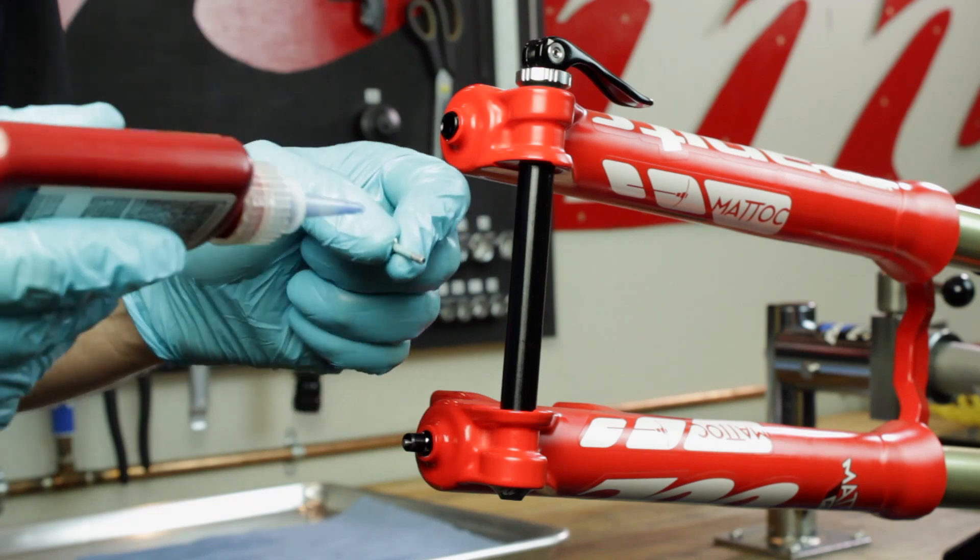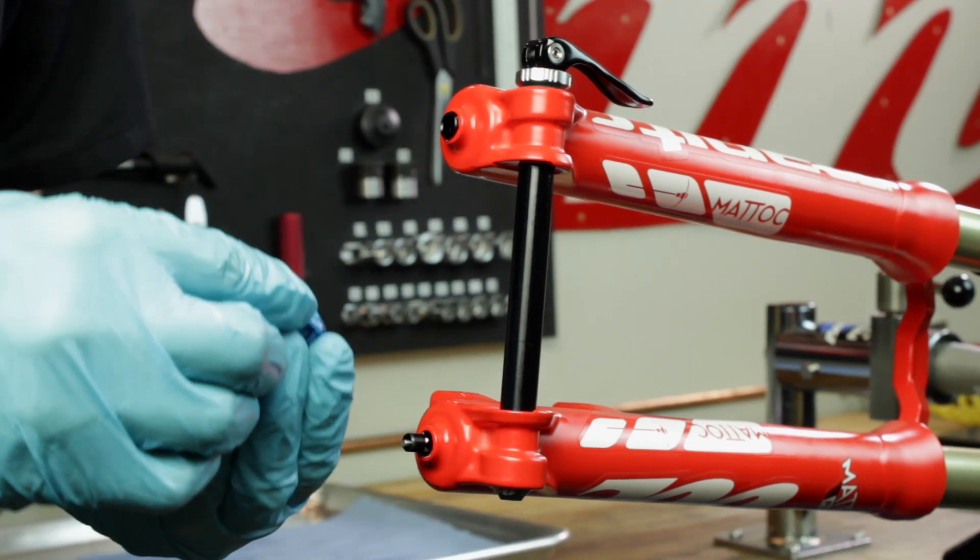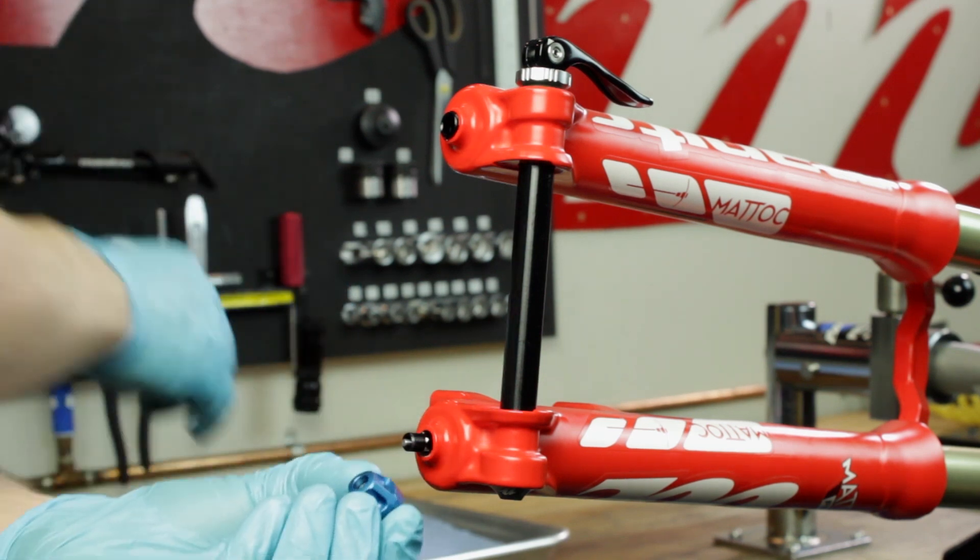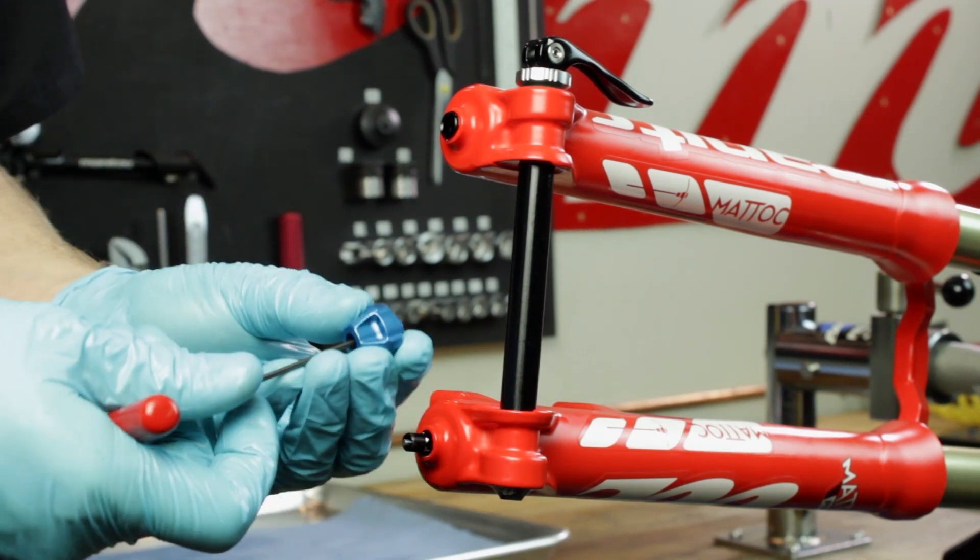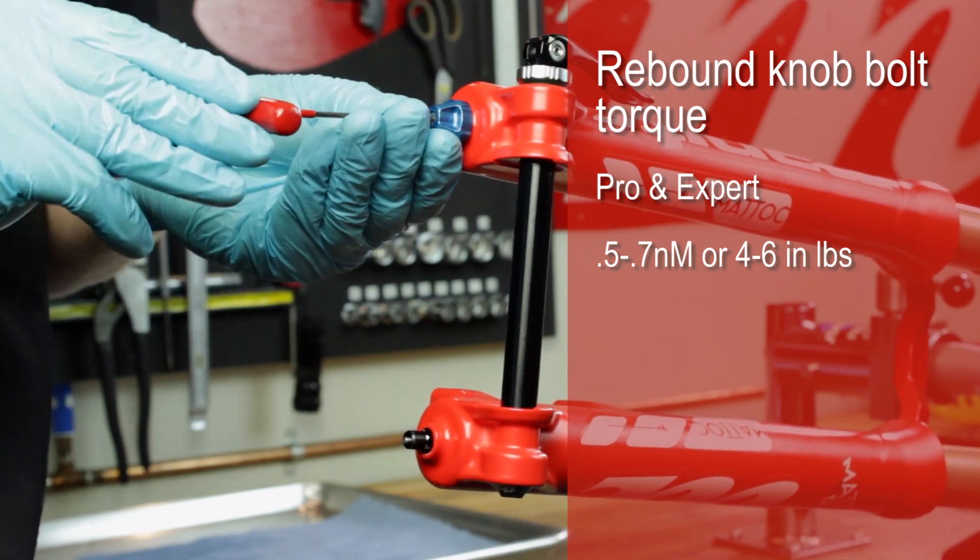Apply a small amount of blue Loctite to the rebound rod bolt threads. Hold the rebound knob still while reinstalling the rebound knob bolt at a torque of 0.5 to 0.7 newton meters or 4 to 6 inch pounds.